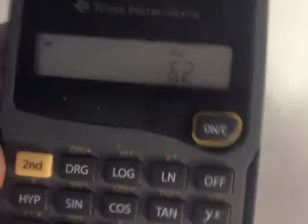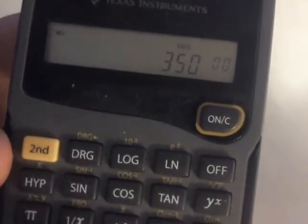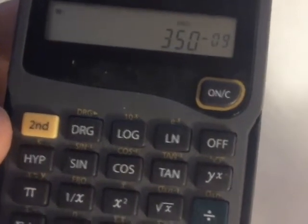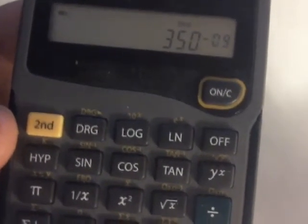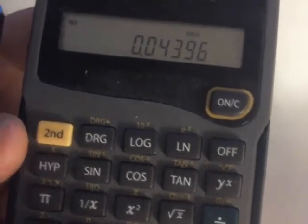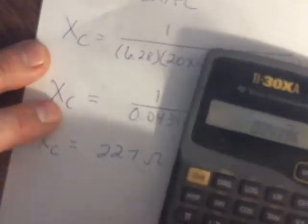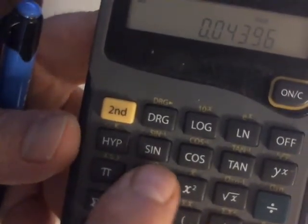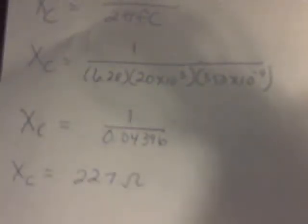I'm going to do 6.28 times 20 EE3 times 350 and then times 10. And I'm going to do negative 9. I have to do the 9 first and then the negative. That's why these calculators are fine, but there's things you kind of do counterintuitively, which means you kind of do things a little backwards sometimes. Then I hit equals. That's how I get the .04396. You can either just do 1 divided by that or press that 1 over x button or x negative 1 button. I get 22.7. And since it's not 22,000 or something, I just leave it as ohms.